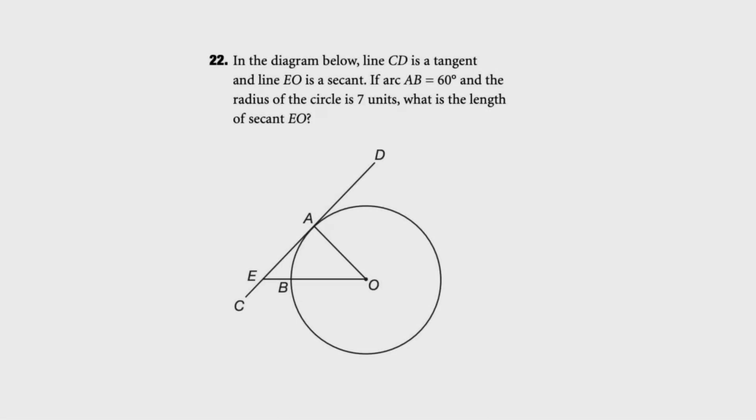All right, let's move on to our next set of December SAT predictions for the math section. This one says, in the diagram below, line CD is a tangent, and line EO is a secant. If arc AB is 60 degrees and the radius of the circle is 7 units, what is the length of secant EO? Pause the video, try the problem on your own.